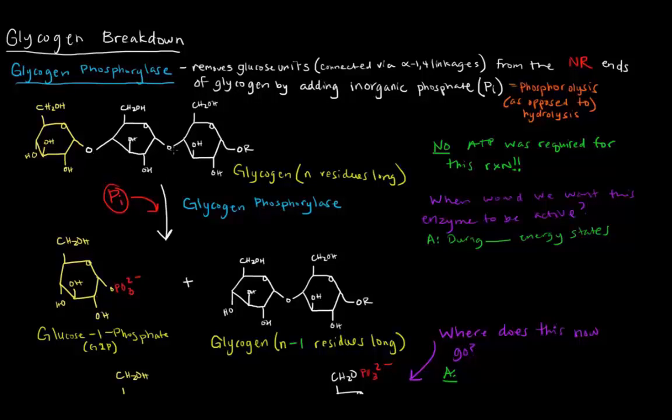We start off with a glycogen chain that's n residues long, where we have this end here being the non-reducing end, and this end over here, assuming this chain goes on further and further, has a free OH group at the anomeric carbon. This would be the reducing end.